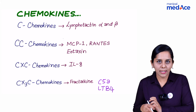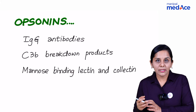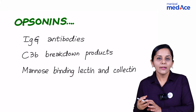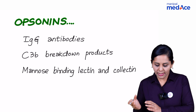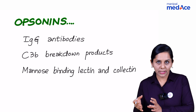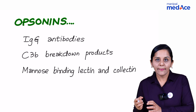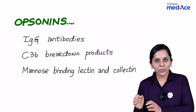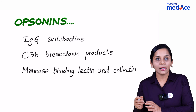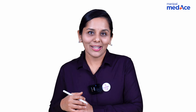But what makes Panipuri very tasty? That is nothing but the opsonins — the paani within the puri which makes it tasty. Similarly, what makes the food very tasty for phagocytes is the opsonins. The IgG antibodies, C3B breakdown products, mannose-binding lectin, and collectins are the important opsonins. Thank you and hope you enjoy the story of Panipuri.